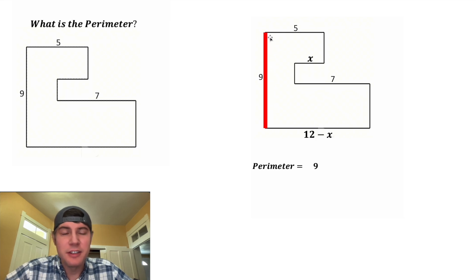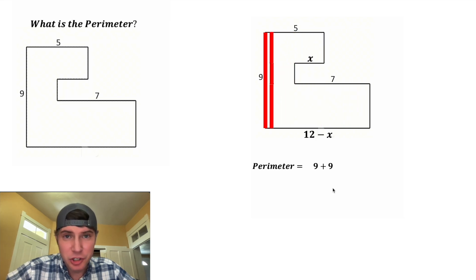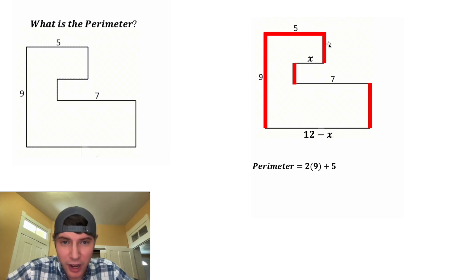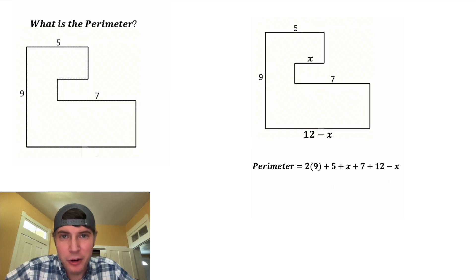This height right here is equal to 9. And the sum of these three sides would also be equal to 9. And this animation shows how they're both 9. And then to clean this up, 9 plus 9 is equal to 2 times 9. Then we can do plus 5 plus X plus 7 plus 12 minus X. And after we simplify this, we will have our perimeter.